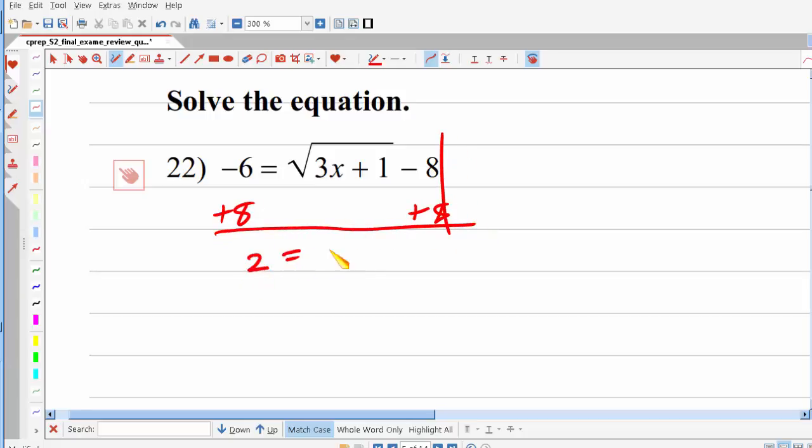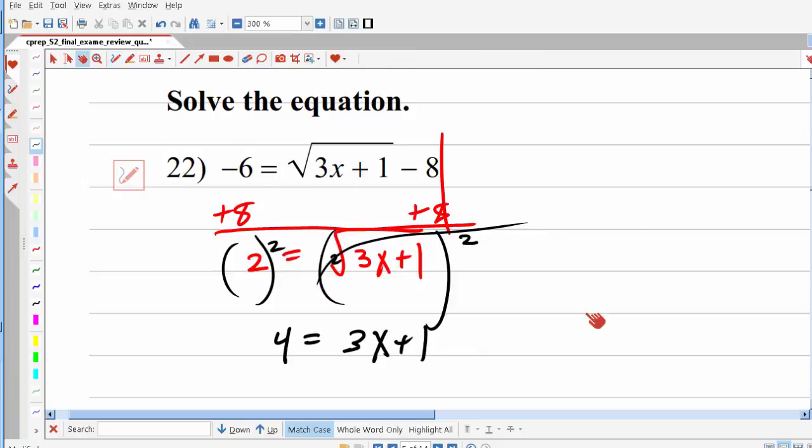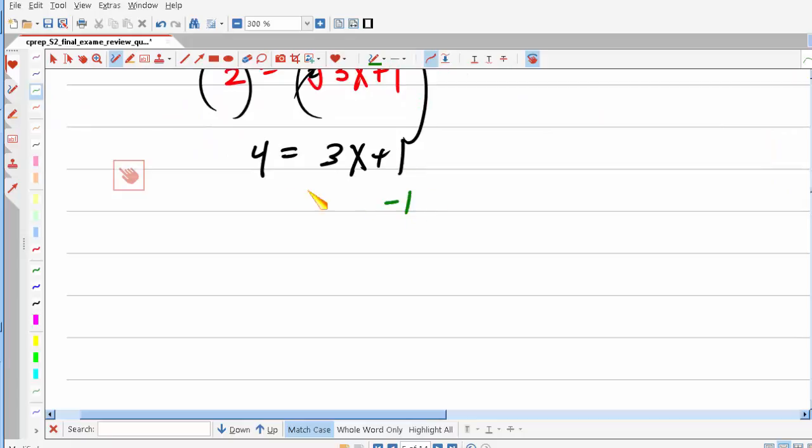So that's gonna give me 2 equals the square root of 3x plus 1. And now I'm gonna raise both sides of the equation to a power that's equal to the index of the radical. So I'm gonna go to the second power and I get 4 equals 3x plus 1 because the radical is gonna cancel out and disappear. Now I'm gonna subtract 1 and get 3 equals 3x, divide by 3, and I get x equals 1.